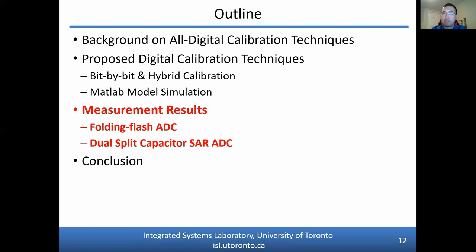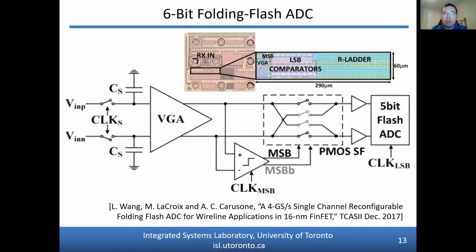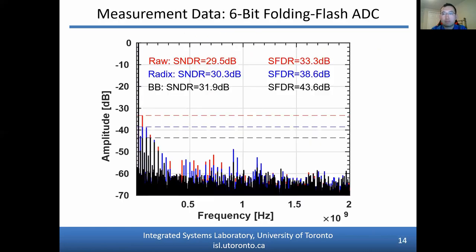The previously described calibration algorithms are applied to measurement data obtained from a 6-bit folding flash ADC. In the flash ADC, static nonlinearities can arise from mismatch in the reference generation — specifically the resistor ladder used for setting threshold levels. Applying bit-by-bit calibration, shown in black, further improves the SNDR and SFDR compared to radix calibration. Specifically, there is approximately a 10 dB improvement in SFDR after applying bit-by-bit calibration compared to the raw measurement data. With the flash ADC architecture, random offset is a significant source of nonlinearity to which bit-by-bit calibration is well suited to correct.